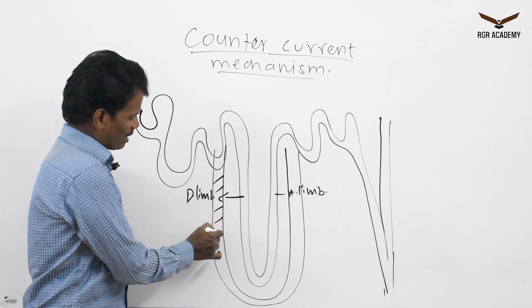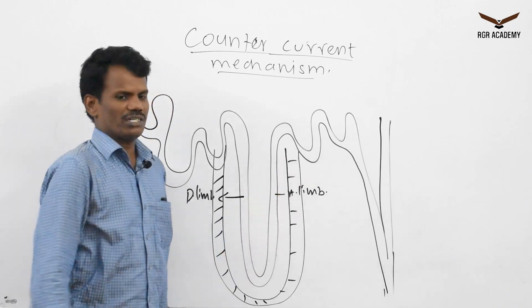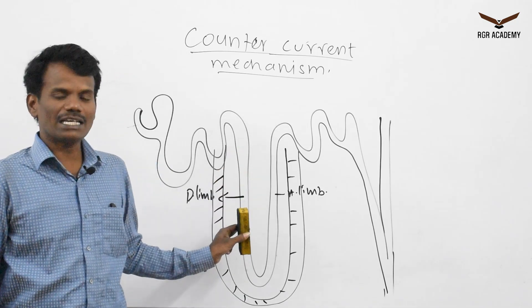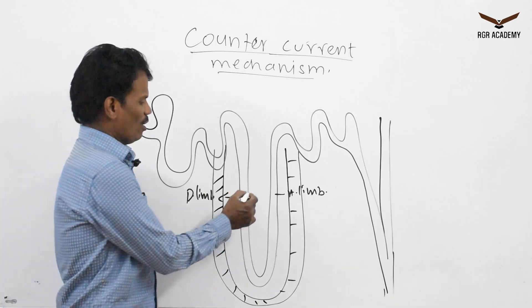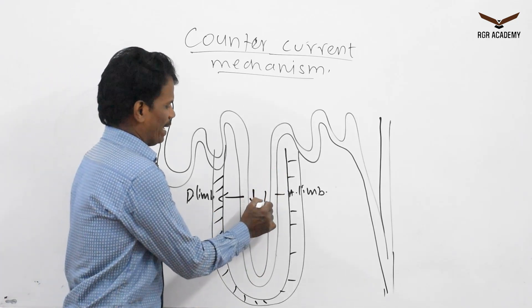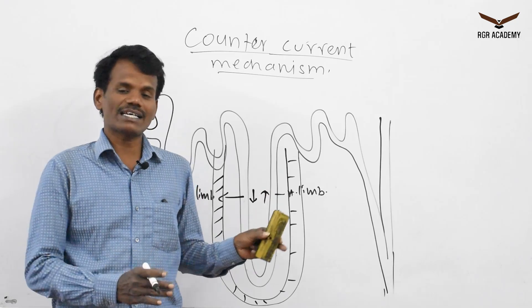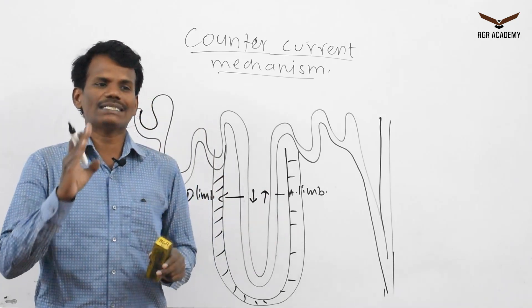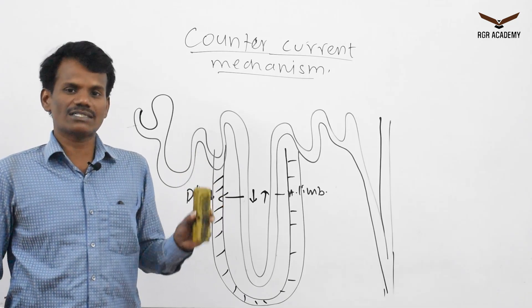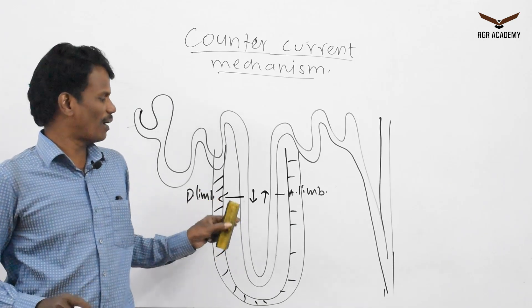The vasa recta is arranged around the Henle's loop. This structure is helpful for concentration of the urine. In the descending limb of the Henle's loop, the glomerular filtrate flows downwards, and in the ascending limb, the glomerular filtrate moves upwards. The flow of fluid inside these two tubules is in opposite directions — we call that counter current flow.